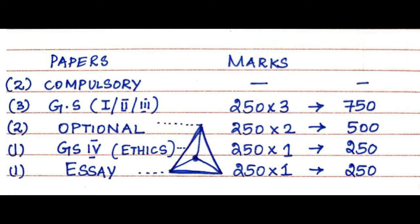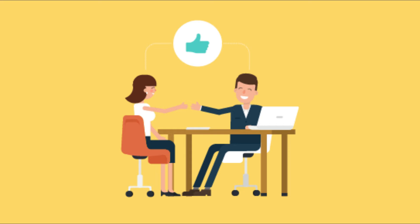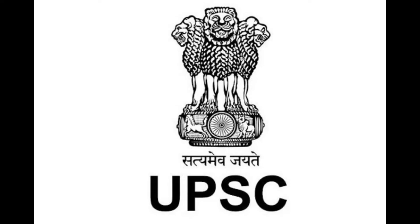Now let's consider the Mains Examination. It has nine papers: two compulsory papers, four general studies papers, two optional papers, and an essay paper. Since the compulsory papers are just qualifying, they are not included for calculating the marks. The other seven papers carry 250 marks each, adding up to 1750 marks. The next stage, the Personality Test, is of 275 marks, making the total 2025 marks for the UPSC examination.